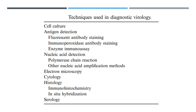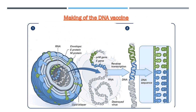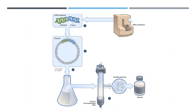RNA is extracted from a virus by destroying the virus. The RNA is then converted to DNA, which represents the whole virus genome. The genetic sequence of the virus is generated from the DNA. Based on the DNA sequence, short sequences of DNA primers are produced that are specific to genes encoding the virus transmembrane protein and the glycosylated envelope protein, respectively.